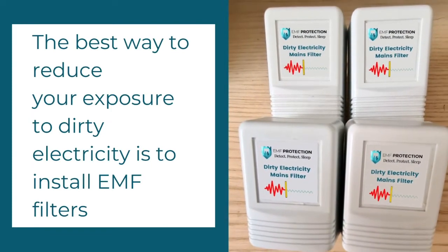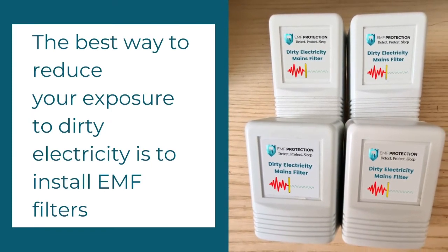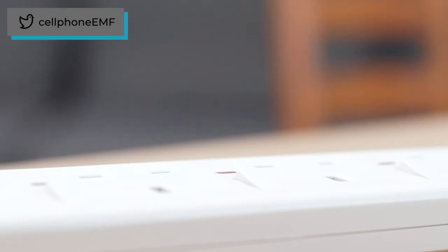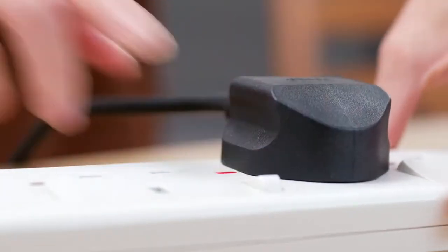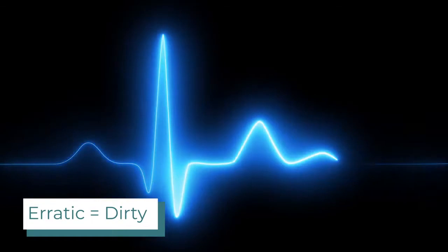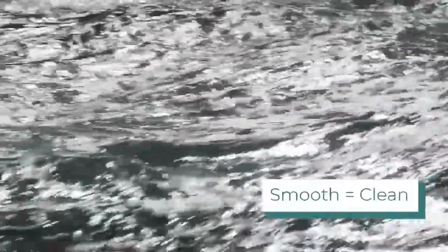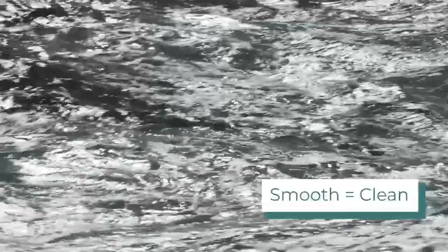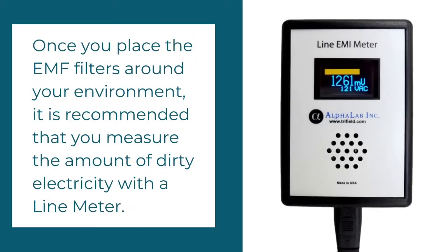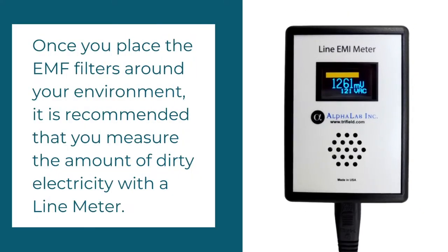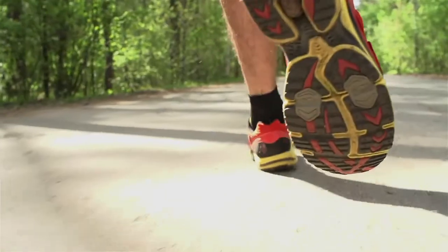The best way to reduce your exposure to dirty electricity is to install filters. Once you have plugged a dirty electricity filter into your plug socket, the sine wave that was once erratic is sent through the filter and is then calmed. Coming out is clean electricity. If you place enough dirty electricity filters around your home, office or school, you will be able to measure the amount of dirty electricity present with a line meter to make sure it is at a low level that you feel comfortable with.